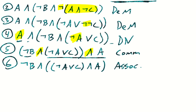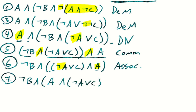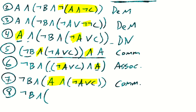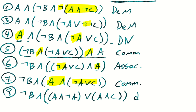Now we want this not a near this a, so let's just flip that — get this a over here. So for line seven: not b and (a and (not a or c)), by the commutative rule. Next, let's distribute this out — we have this a and such and such — because we're going to get that a and not a, which is really what we want. So for line eight: not b and ((a and not a) or (a and c)), by the distribution law.